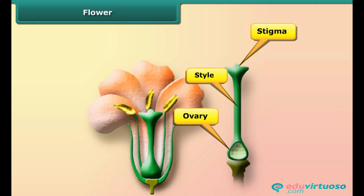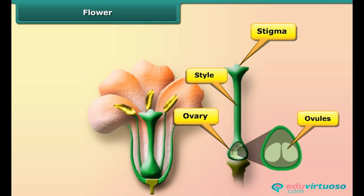The stigma is the sticky surface at the top of the pistil; it traps and holds the pollen. The style is a tube-like structure that holds up the stigma. The style leads down to the ovary, which contains the ovules.